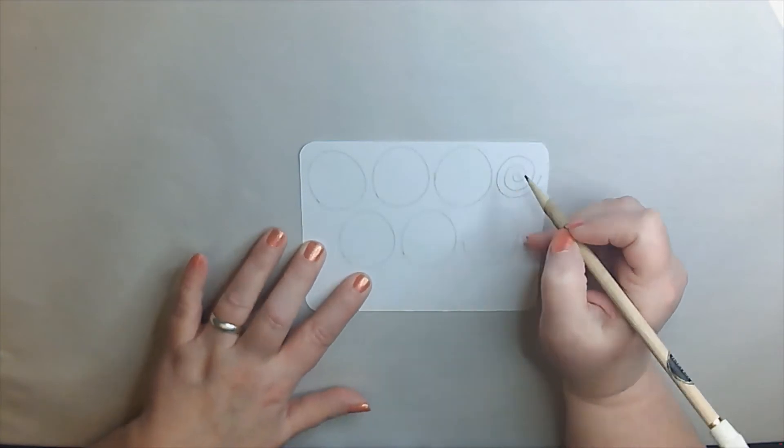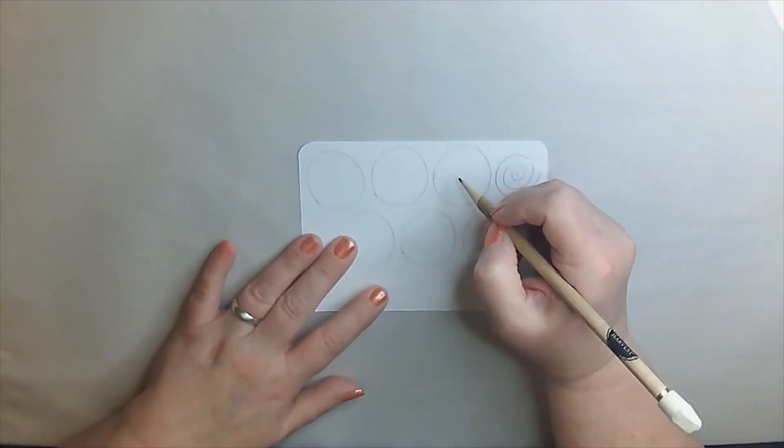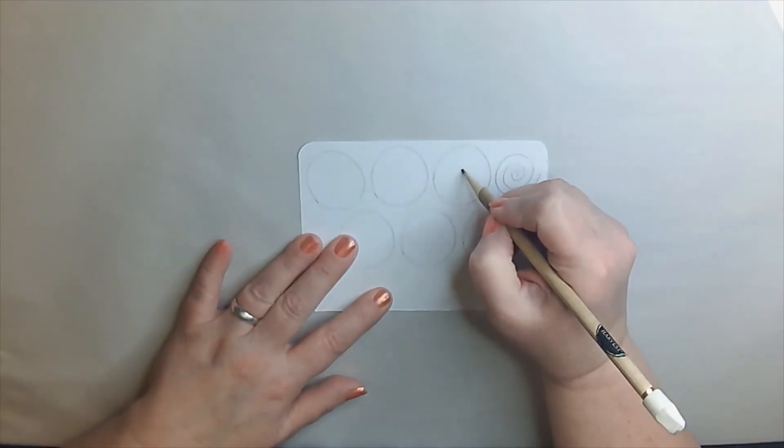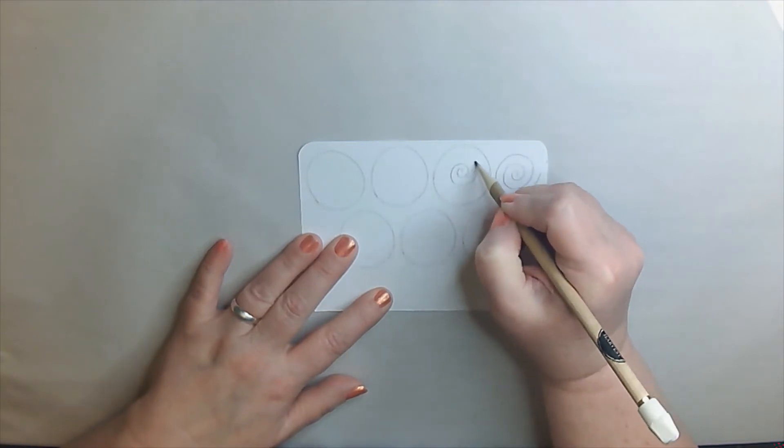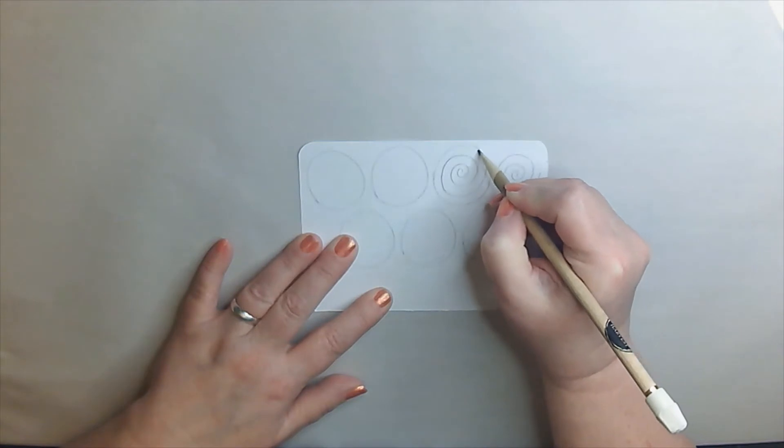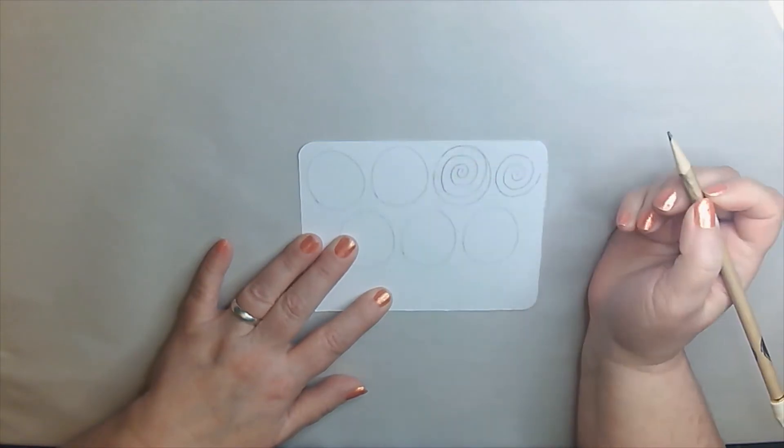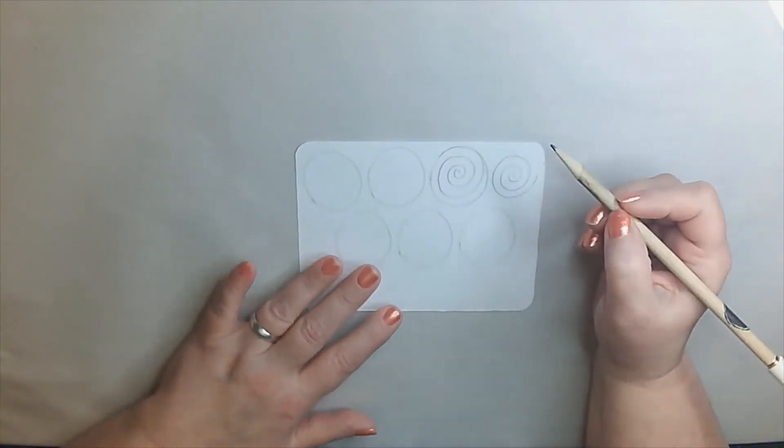Now I want you to do that circle in a circle. And we'll start here in the center. And we're just going to swirl it around until you hit the edge of that paper. Edge of the circle. I'm sorry. There we go.